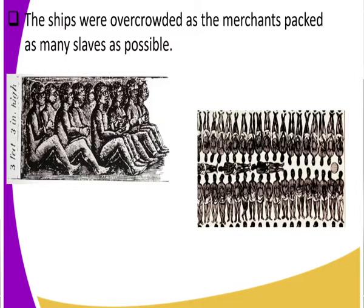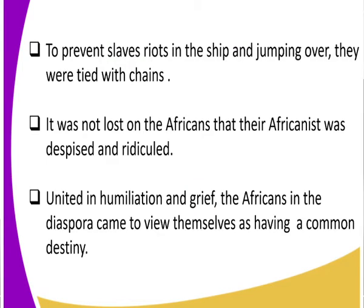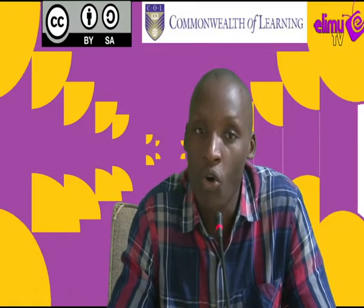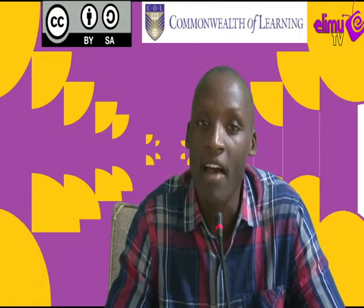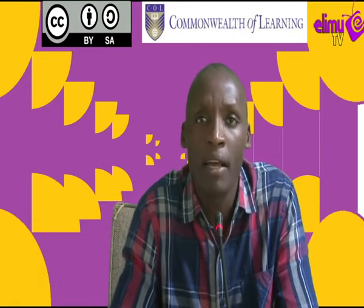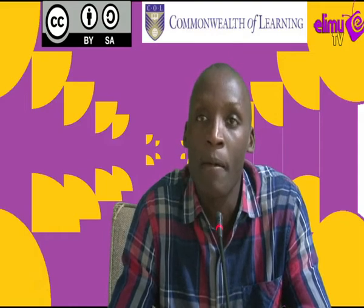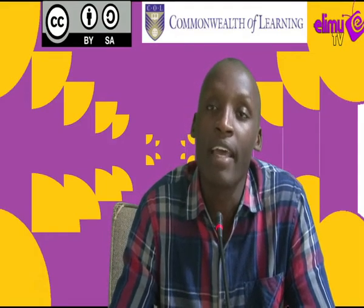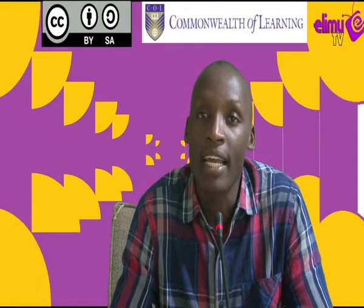A ship supposed to carry around 200 people was forced to carry over 1,000. These conditions awakened the African people of African origin, and that is why they decided to form a unifying factor. Getting from Africa to the South American continent was not easy — the slaves were tied in chains in the ships, which prevented riots and jumping over. However, a number of Africans did jump over the ship and die in the Atlantic Ocean.